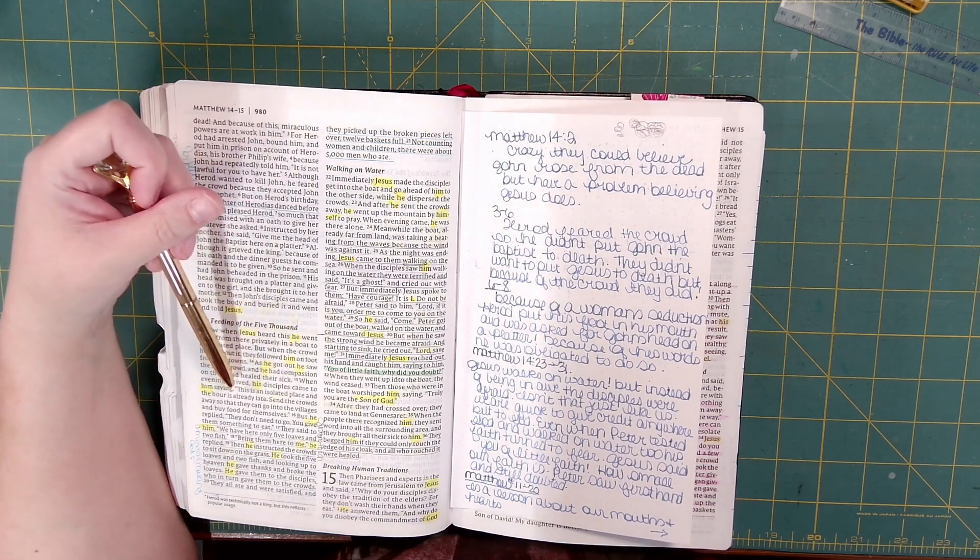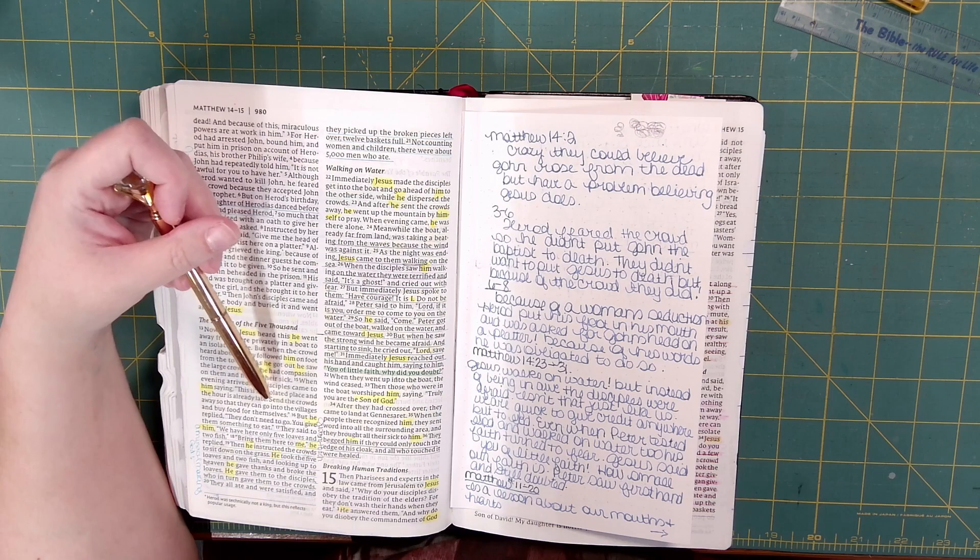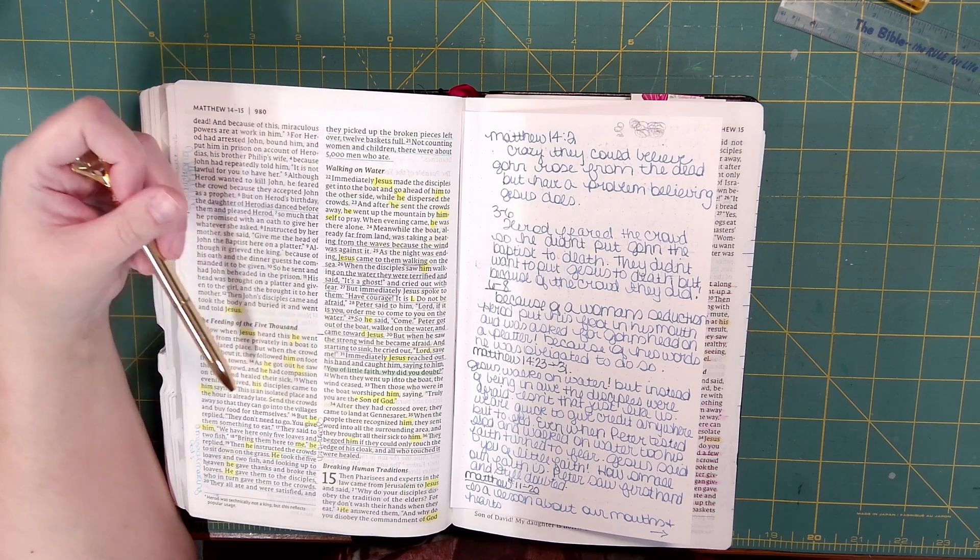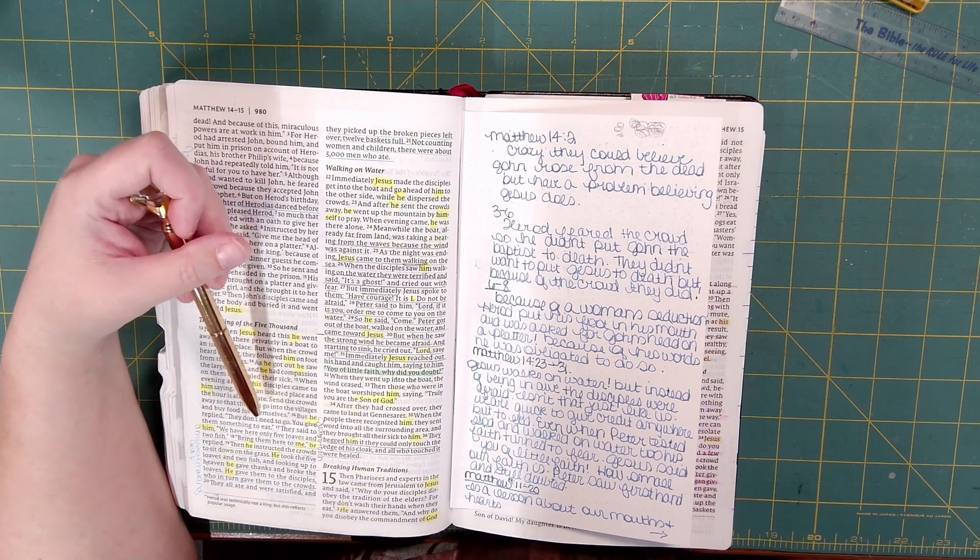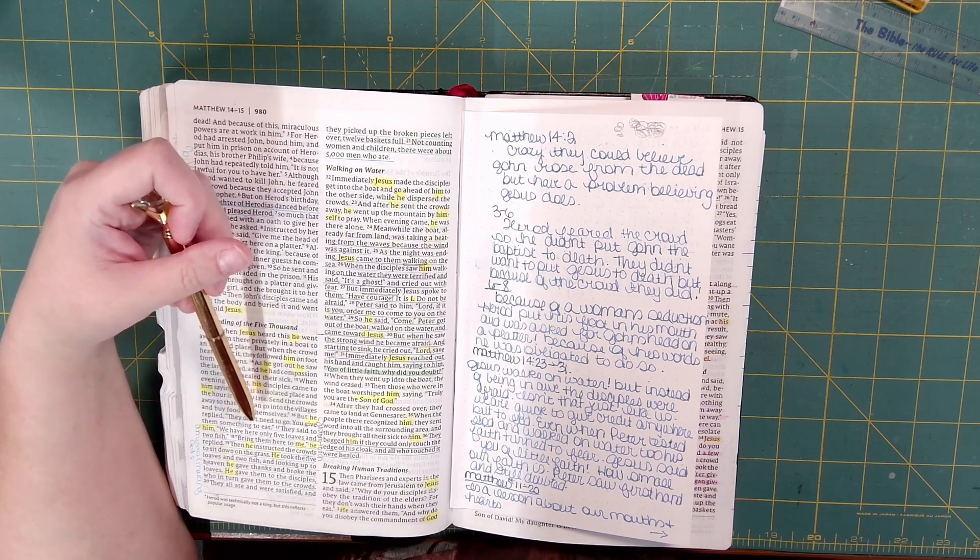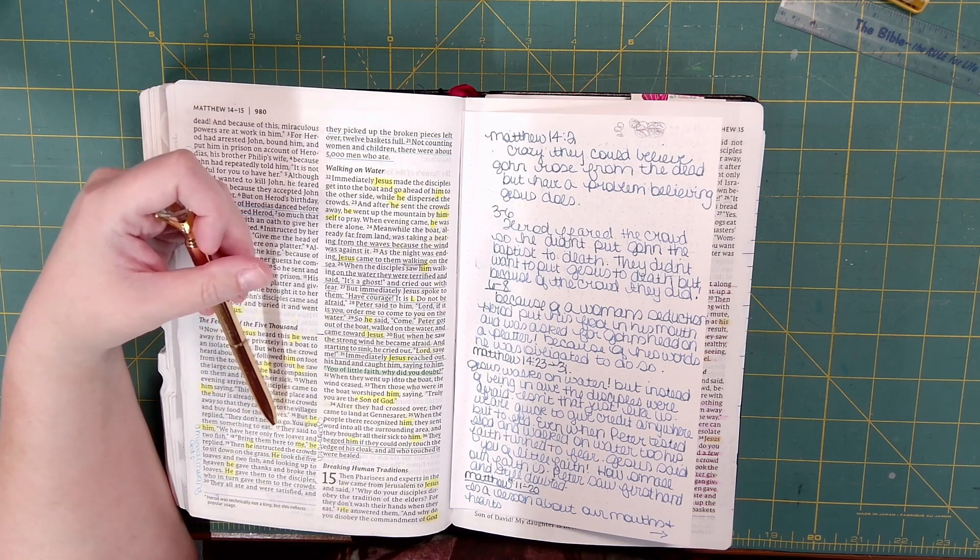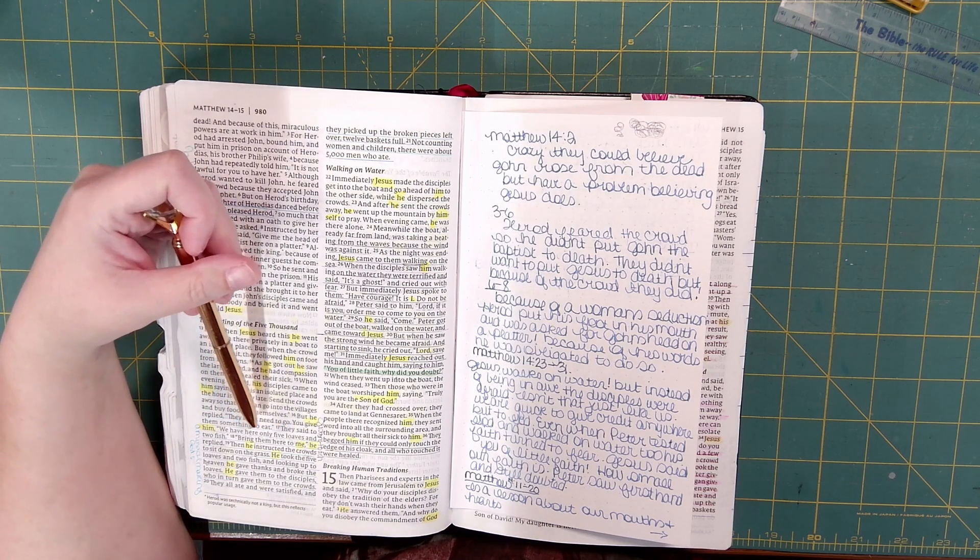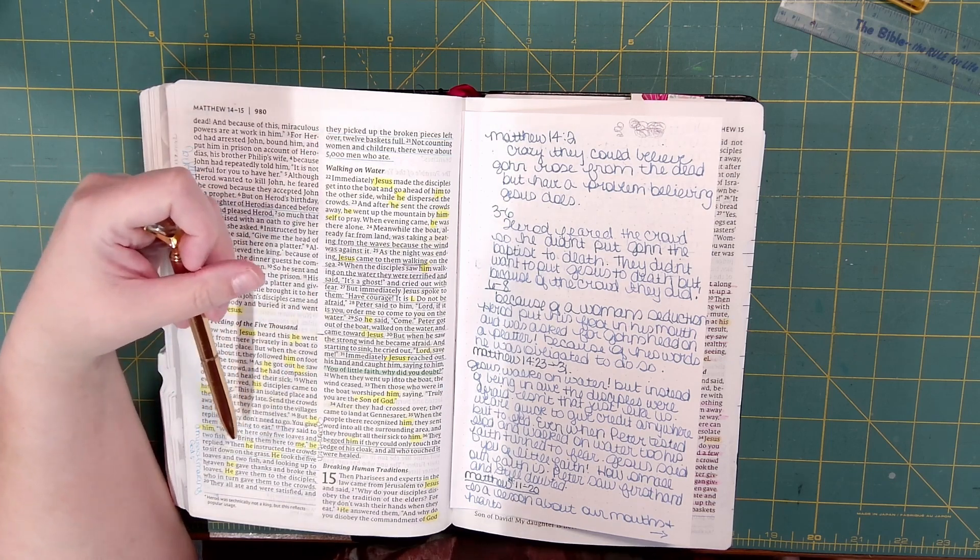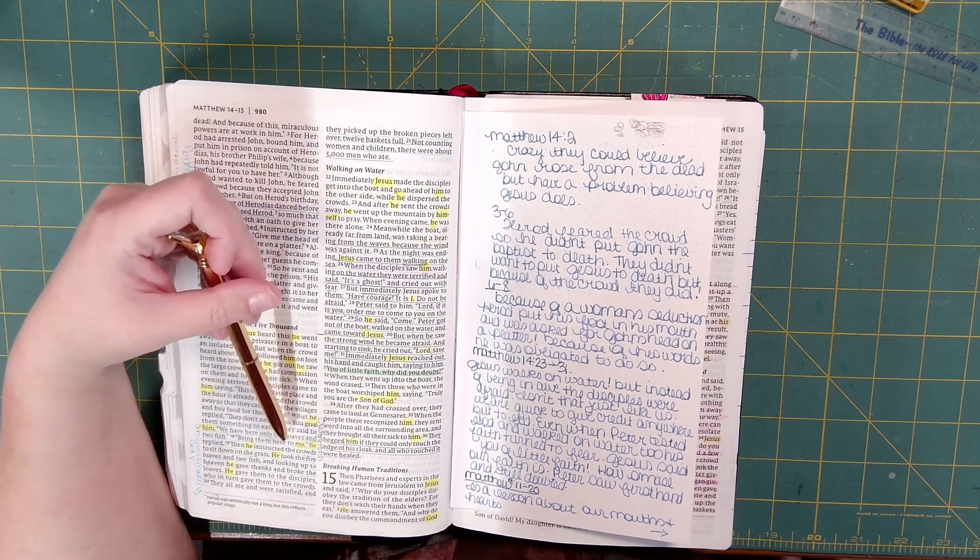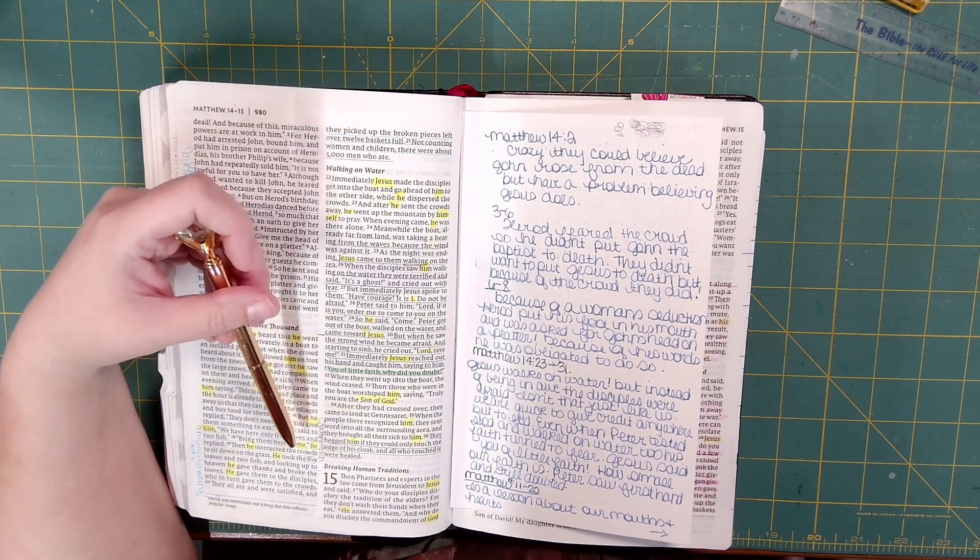When evening arrived, his disciples came to him, saying, This is an isolated place, and the hour is already late. Send the crowds away so they can go into the villages and buy food for themselves. But he replied, They don't need to go. You give them something to eat. They said to him, We have here only five loaves and two fish. Bring them here to me, he replied.